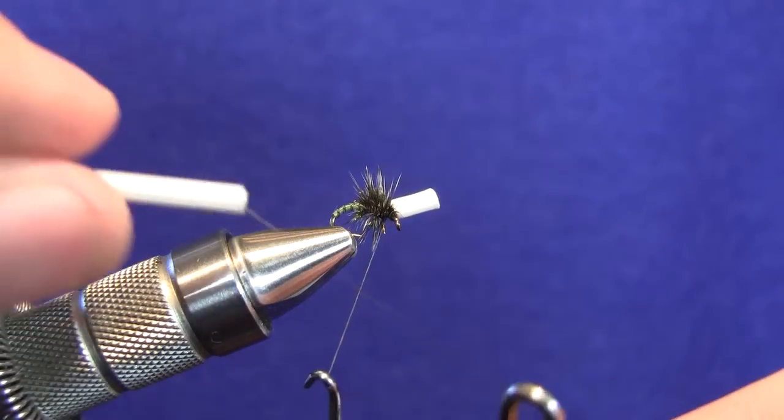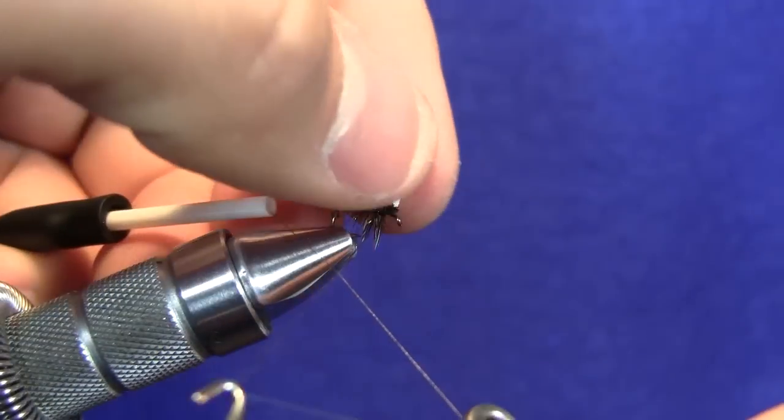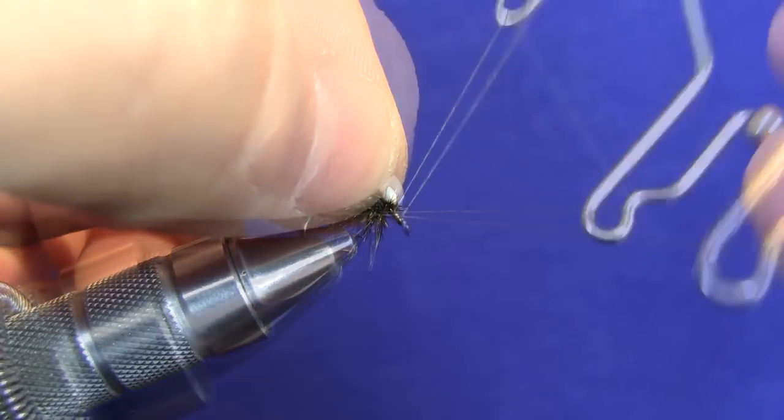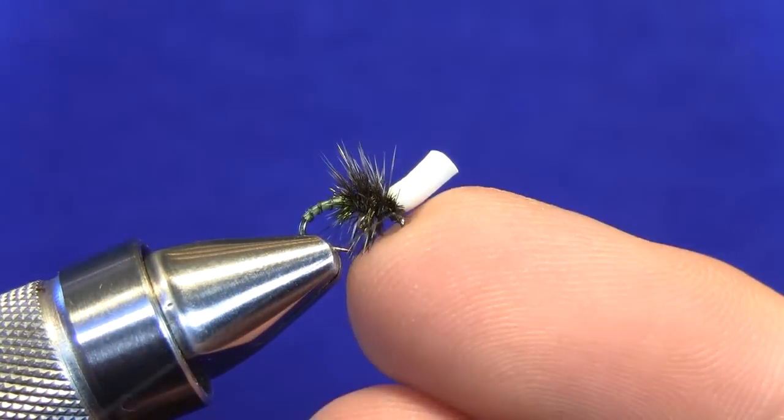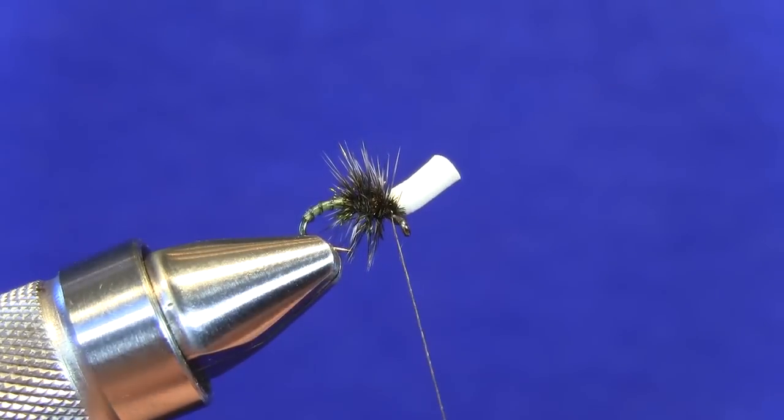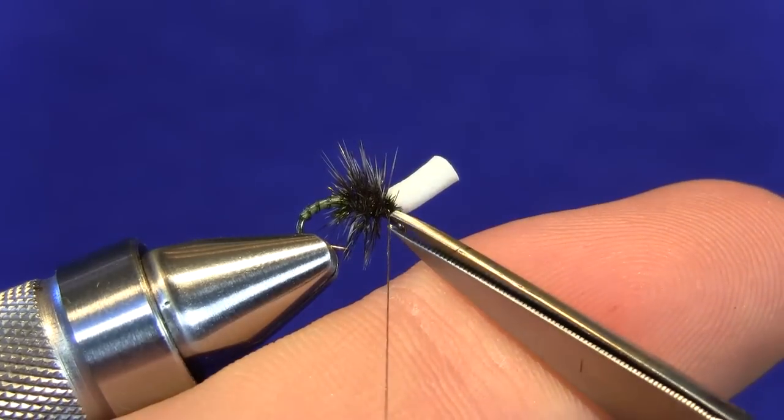Now that we have that taken care of, we're just going to grab our whip finish. We're going to kind of pull that post back with our thumb and our forefinger, and we'll just finish that out, pull out the loop, snug that up, and then just snip out the tag end of that thread with our scissor tips.